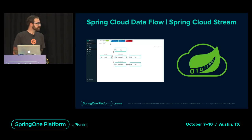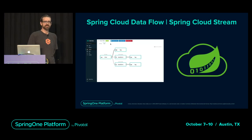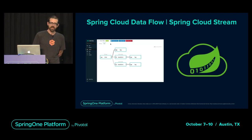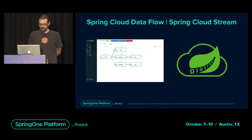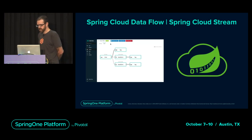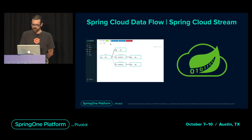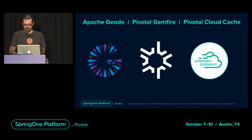For the rest of this talk, when we go through code snippets, remember the programming model we're really focusing on is Spring Cloud Stream. Anything we create in Spring Cloud Stream we can deploy through Spring Cloud Data Flow, which is an orchestrator. That said, we're also talking about Geode today — and that's the important part.